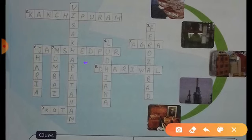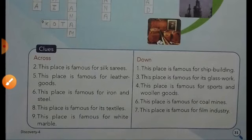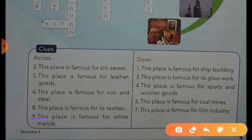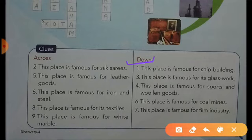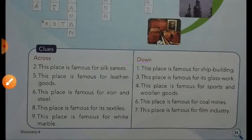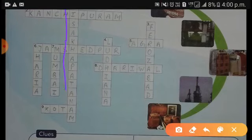Now come to the next. This place is famous for its textile — the answer is Dhariwal. Dhariwal is famous for textile. Next, number nine: This place is famous for white marble — the answer is Kota. Kota is famous for white marble. Down clues: This place is famous for ship building — the answer is Visakhapatnam.